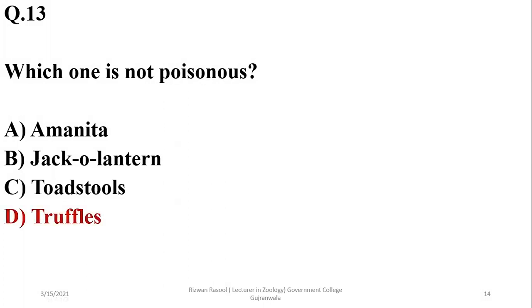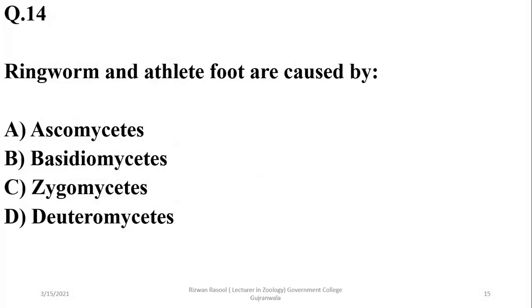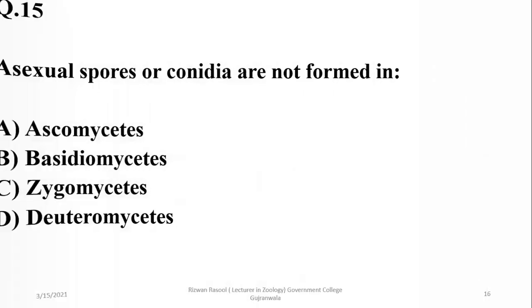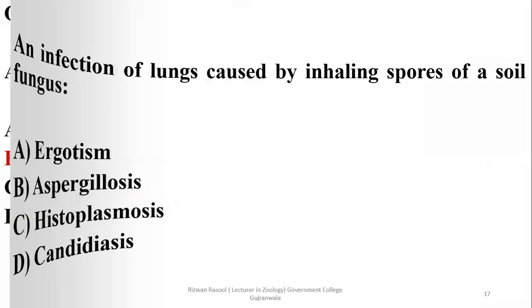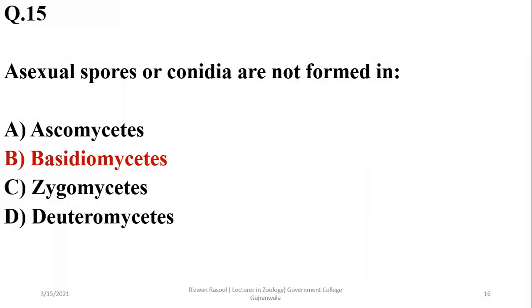Ringworm and athlete's foot are caused by imperfect fungi or deuteromycetes, D. And asexual spores or conidia are not formed in basidiomycetes because usually asexual reproduction is missing in basidiomycota.